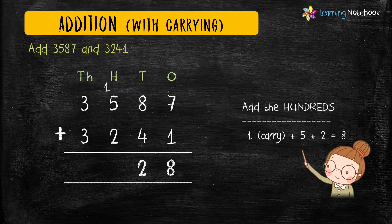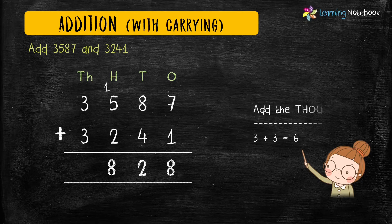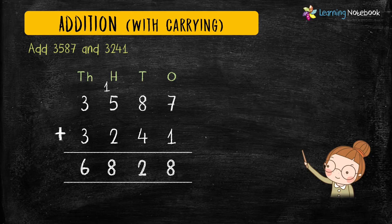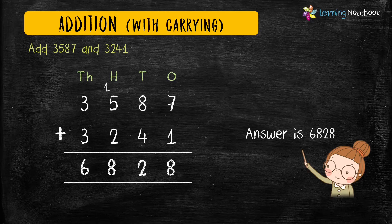Now let's add the digits at hundreds place: 1 carry plus 5 plus 2 equals 8. And next, add the digits at thousands place: 3 plus 3 equals 6. So our answer is 6828.